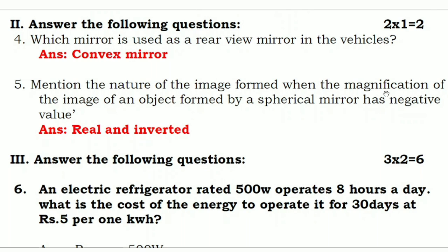Fifth question: mention the nature of the image formed when the magnification of the image of an object formed by a spherical mirror has a negative value. The answer is real and inverted. When the object is formed by a spherical mirror and the magnification has a negative value, the image is always real and inverted. If the value were positive, the image would be virtual and erect.